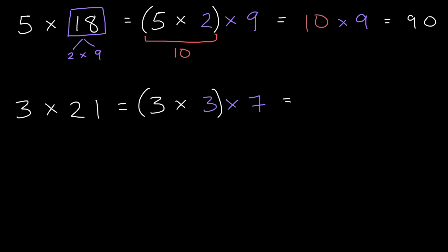Well, then this is going to be equal to, what, 3 × 3? It is 9, and then times 7, which you may already know is equal to 63.